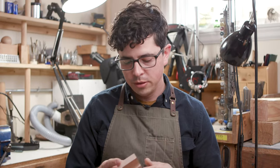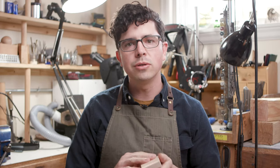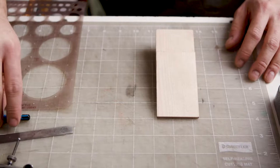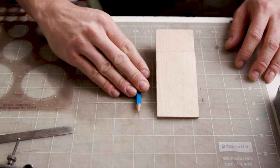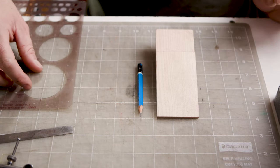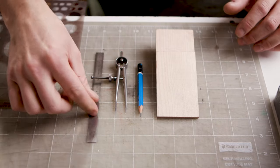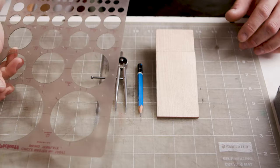The first step to customizing your bench pin is going to be to draw the design out in pencil. Technically you could just use a pencil and freehand draw the whole thing but I like to use a few more tools. I want to have a pair of dividers, a ruler, and a circle template.